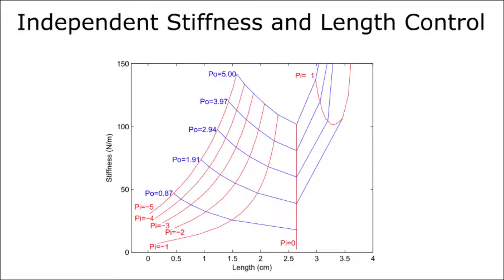This plot shows no load length on the horizontal axis and actuator stiffness on the vertical axis. The contours of constant inner and outer pressure show that it is possible to independently change actuator length and stiffness. This plot also allows quantification of achievable stiffnesses given certain pressure limits.